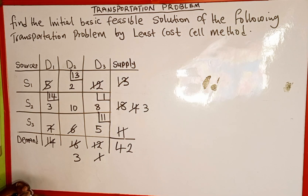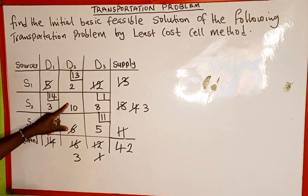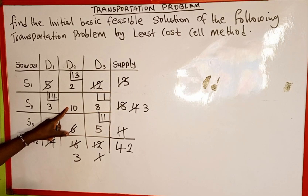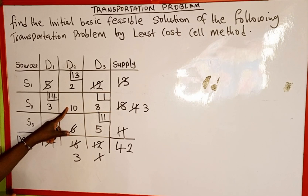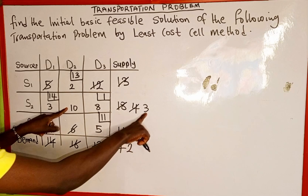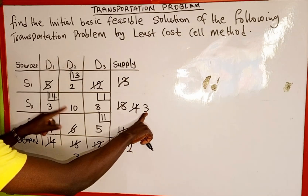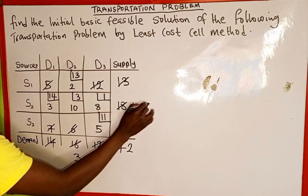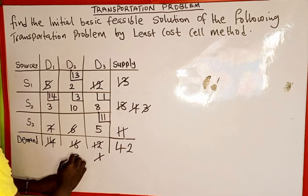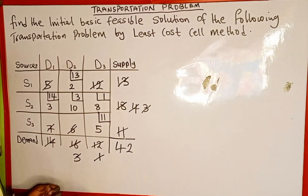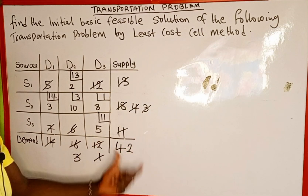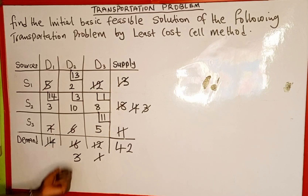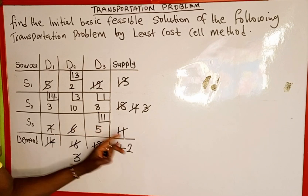The only remaining undeleted value is 10. We compare the supply and demand corresponding to cell 10: we have 3 and 3. We allocate the remaining 3, then delete both the supply of 3 and demand of 3. There are no more undeleted values, so we are done with the allocations.